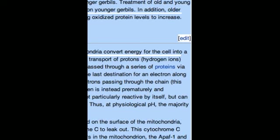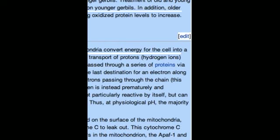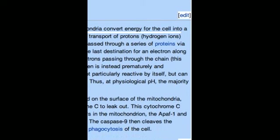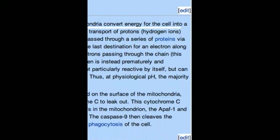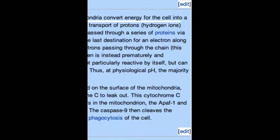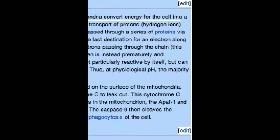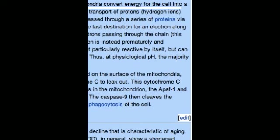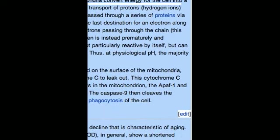This cytochrome C binds to Apaf-1 (apoptotic protease activating factor 1), which is a free-floating protein in the cell's cytoplasm. Using energy from the ATP in the mitochondrion, the Apaf-1 and cytochrome C bind together to form apoptosomes. The apoptosomes bind to and activate Caspase-9, another free-floating protein. The Caspase-9 then cleaves the proteins of the mitochondrial membrane, causing it to break down and start a chain reaction of protein denaturation and eventually phagocytosis of the cell.